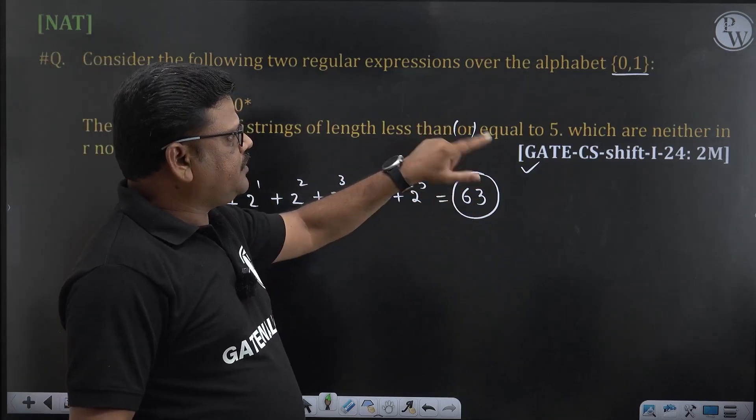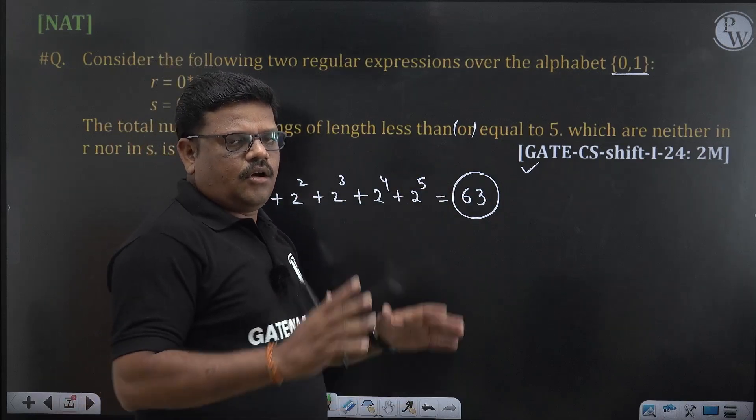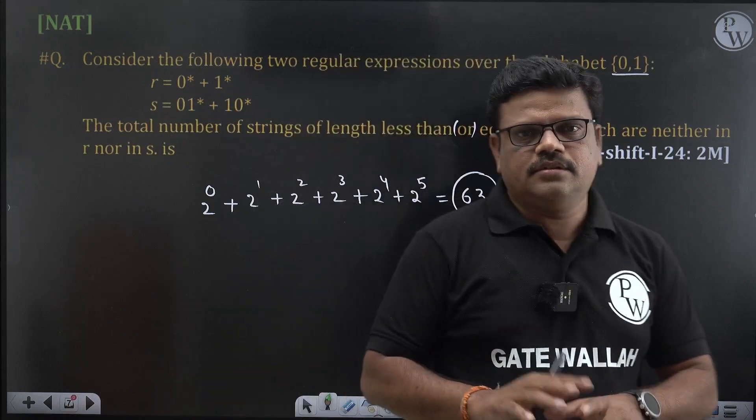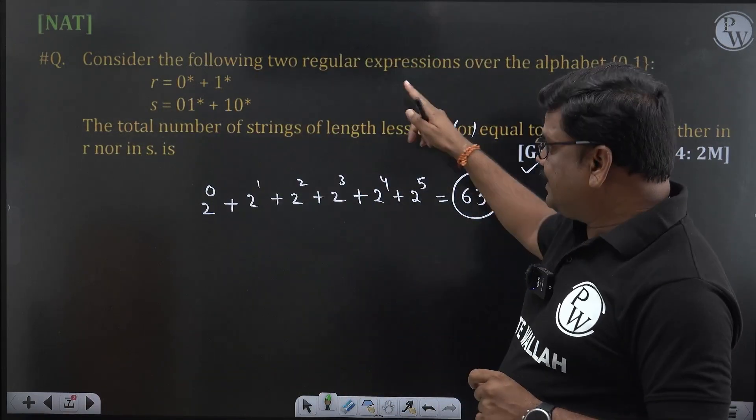Over this alphabet {0,1}, all 0 length, all 1 length, all 2 length, all 3 length, all 4 length, all 5 length, if you add all this the value is 63. But the strings which are there in these two we do not want.